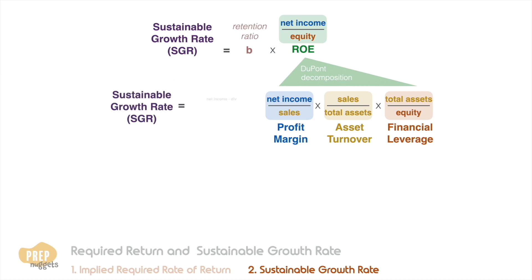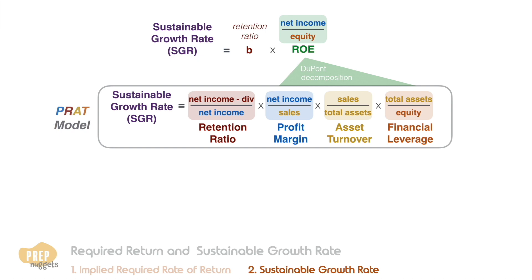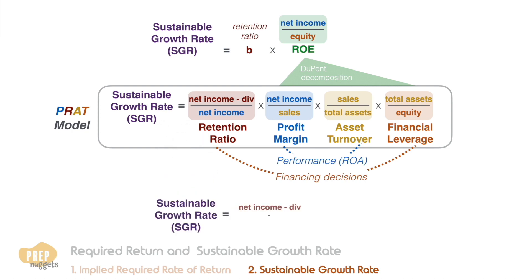This means that the sustainable growth rate of a company is a factor of these three components and the retention ratio. This is also called the PRAT model, based on the first letter of each of the four components. Two of these factors are functions of the firm's financing decisions and the other two are functions of performance. The product of the two performance factors is actually the return on assets of the firm. The intermediate terms all cancel out, so the sustainable growth rate can also be expressed in terms of net income, dividends, and owners' equity.